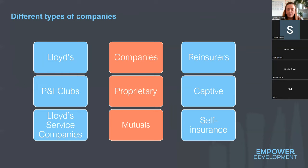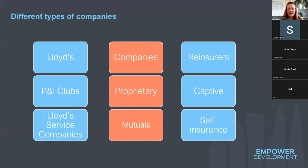Insurance companies come in many different types of ownership. Remember that Lloyd's is a marketplace and an institution, not an insurer. We also have the company market outside the London market, reinsurers who offer reinsurance to insurers, and P&I clubs which are exclusive to marine — I remember that because P&I sounds like P&O, the ferries. We have proprietary companies owned by shareholders, and mutual companies owned by policyholders. We also have captive companies — insurers owned by their parent company.